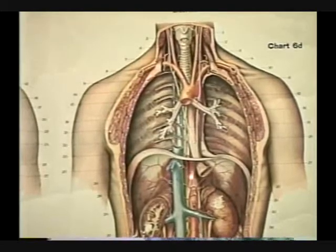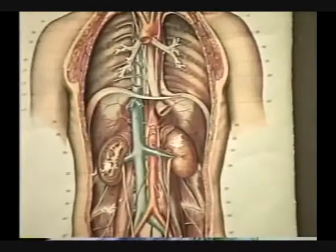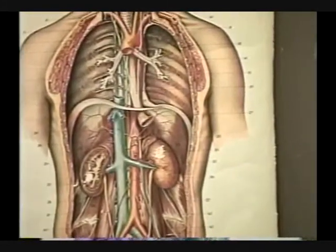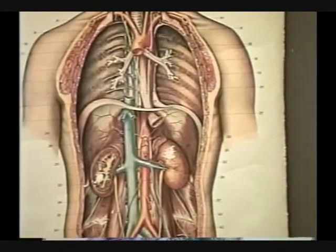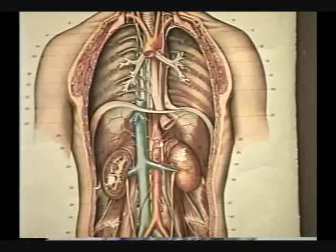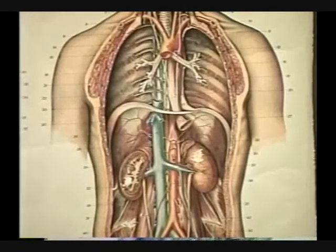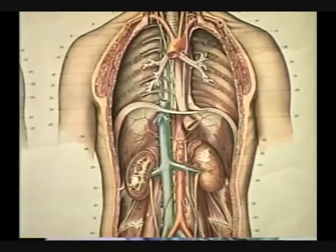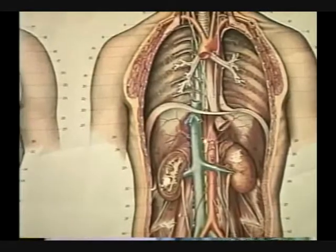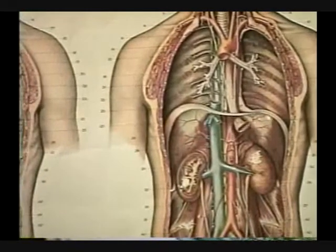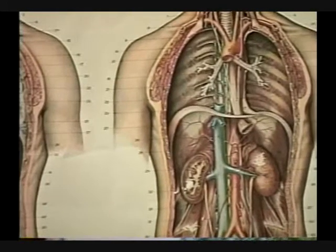We come on down the aorta and we get into the abdominal pelvic cavity and there's a series of major branches. Here is the celiac trunk, and the celiac trunk has these vessels that go out to the spleen, the liver, stomach, and duodenum. We'll look at those in a model here shortly. Also associated there are two arteries that come up and serve the diaphragm — those are the phrenic arteries. They'll be on that model also.